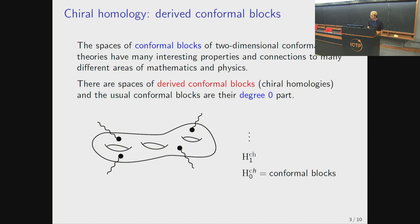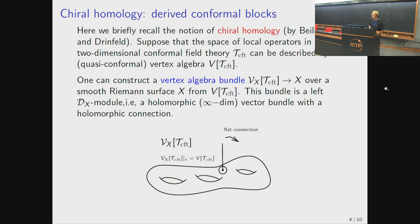The space of conformal blocks is one of the main objects in the study of two-dimensional conformal field theories. Today I will try to explain the space of derived conformal blocks, in mathematical literature known as Cairo homology. The usual conformal blocks or coinvariants are the degree-zero part, so there is a sequence of vector spaces. I will briefly recall the notion of Cairo homology introduced by Benz and Greenfeld.